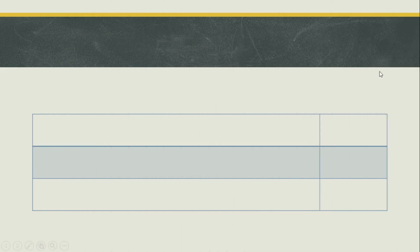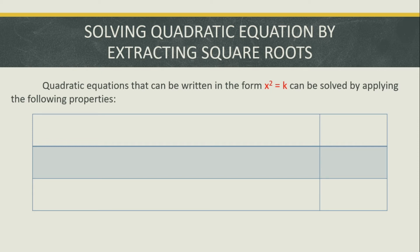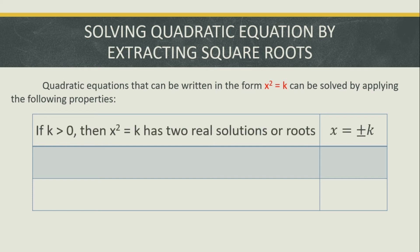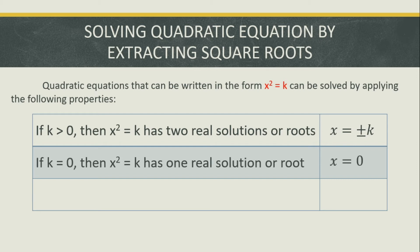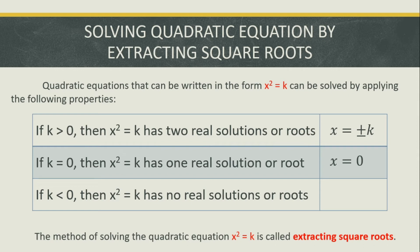Our lesson for today is all about solving quadratic equations by extracting square roots. Quadratic equations that can be written in the form x squared is equal to k can be solved by applying the following properties. If k is greater than 0, meaning k is positive, then x squared is equal to k has two real solutions or roots — that is x is equal to positive or negative square root of k. If k is equal to 0, then x squared is equal to k has one real solution or root, that is x is equal to 0. If k is less than 0, meaning k is negative, then x squared is equal to k has no real solutions or roots. The method of solving the quadratic equation in the form x squared is equal to k is called extracting square roots.